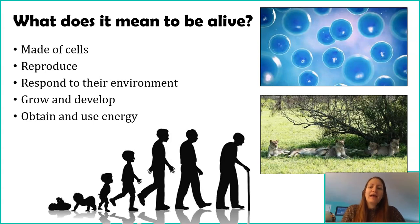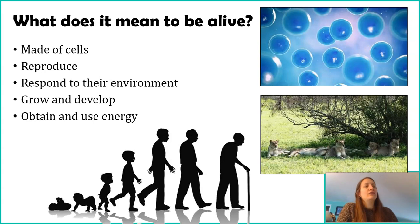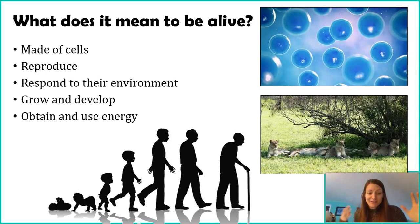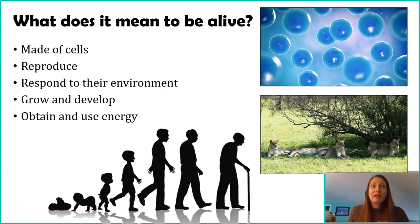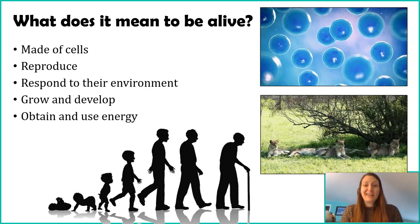All living things have to obtain and use energy. There are many ways this can be accomplished — through photosynthesis, cellular respiration, chemotrophs, autotrophs, and heterotrophs. There are lots of different styles of getting energy, but no matter what, they need energy. More specifically, they need ATP. How they create that ATP could differ, but in the end they need ATP to carry out cellular processes.